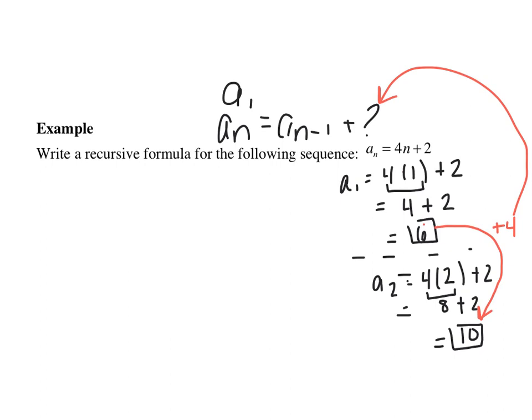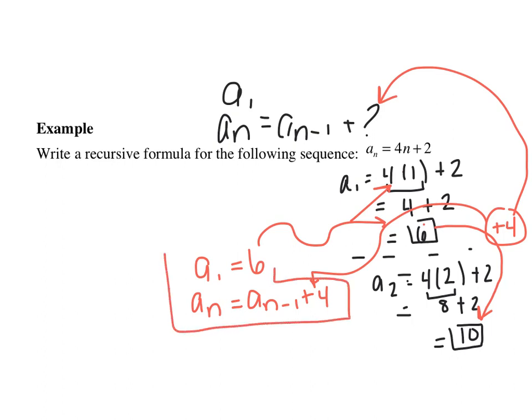So my recursive rule for this question would be a sub 1 equals 6 because that's my first term. I got that by plugging in. And a sub n equals a sub n minus 1 plus 4. What I would recommend after looking at this problem is watch this whole video just one more time. I promise you, if you watch this video two or three times total, it will make 100% more sense.